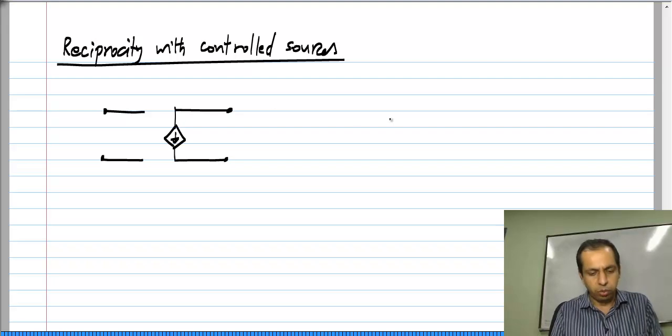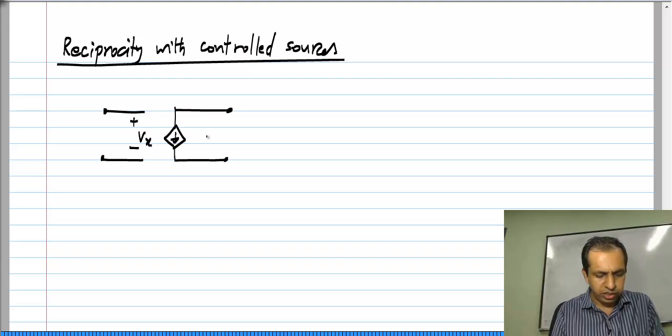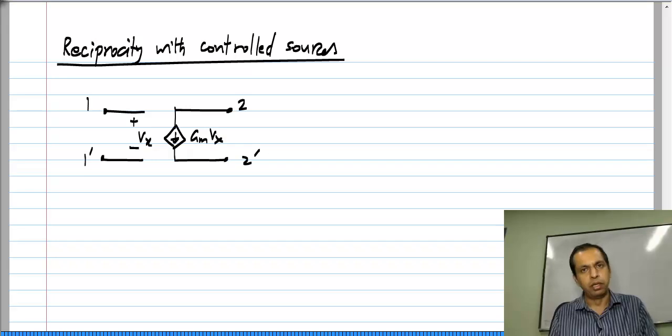Let us say I take only a voltage controlled current source. This is VX and this is GMVX. If I define this to be my two port,